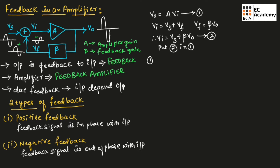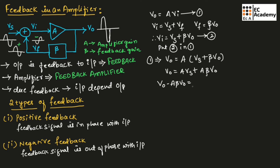If we substitute equation number two into equation number one, we get V_out = A × (Vs + β·V_out), which expands to A·Vs + A·β·V_out. Taking the V_out term to the left-hand side: V_out − A·β·V_out = A·Vs. Taking V_out as common: V_out(1 − A·β) = A·Vs. Therefore, V_out divided by Vs equals A divided by (1 − A·β).